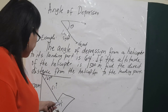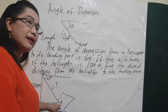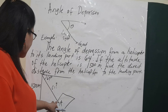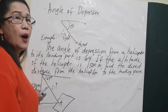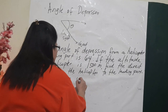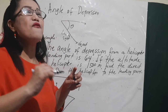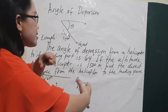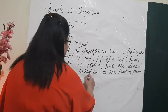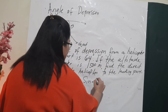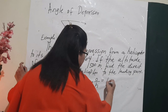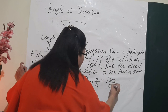Let us identify the sides relative to the angle. This is angle A — 64 degrees. The 1,500 meters altitude is the opposite side, and the direct distance we are looking for is the hypotenuse. Opposite over hypotenuse corresponds to the Sine function from SOHCAHTOA. So: sine of 64 degrees equals 1,500 over C, where C is the direct distance.